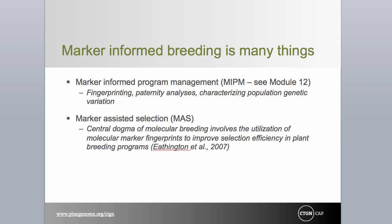Terminology used to define marker applications has become confusing, due in part to the many types of applications and in part due to the whims of investigators. We have chosen the term marker-informed breeding, or MIB, to be inclusive of all applications of markers in tree breeding. Within MIB, we think of two major subdivisions: MIPM, or marker-informed program management, and MAS, or marker-assisted selection. MAS refers to applications that rely on statistically defined associations between phenotype and genotype to guide breeding and selection processes, while all other applications fit within the marker-informed breeding program management portfolio.